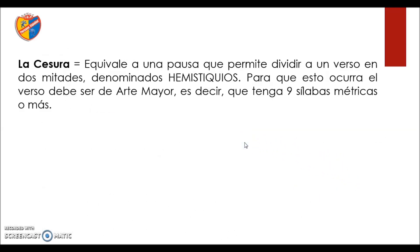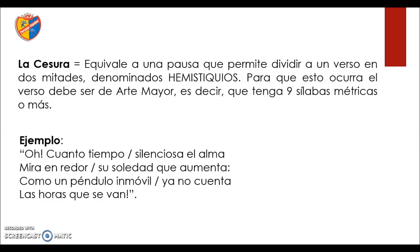Ahora veamos una parte importante dentro del estudio de la versificación: hablamos de la cesura. ¿En qué consiste? Viene a ser una pausa que va a dividir a un verso en dos partes. Esta cesura va a ser denominada en escritos, y se da cuando observemos versos de arte mayor, es decir, que tengan de nueve sílabas simétricas o más. Si ustedes leen la estrofa: '¡Oh, cuánto tiempo silenciosa el alma!', se dan cuenta que al momento de leer hacen una pequeña pausa. Precisamente, a eso se le llama la cesura. Y esta división entre una parte y otra se le va a llamar el hemistiquio.